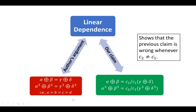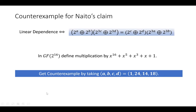We can see directly that a, b, c, d are not all equal. So this is a counter-example to the claim in Naito's paper for NPMAC as we name it.